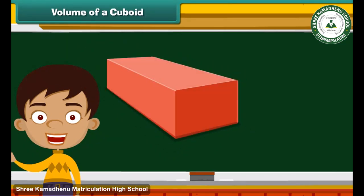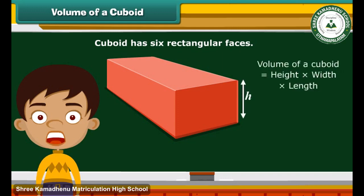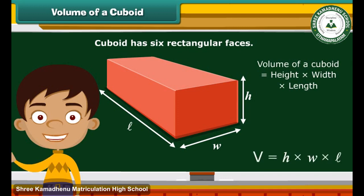Look at this closed box. This is a cuboid which has six rectangular faces. Its volume is calculated as height into width into length, or simply volume equals to H into W into L.